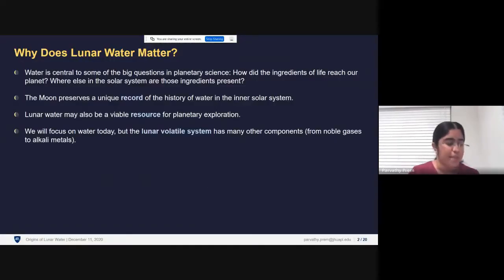I wanted to start by taking a step back and thinking about why this is an important topic. Why does water on the moon matter so much? Water has been central to some of the really big questions in planetary science. Understanding the story of water in the solar system plays such a critical role when it comes to understanding how the ingredients of life got to the Earth-Moon system and where else in the solar system those ingredients are distributed.